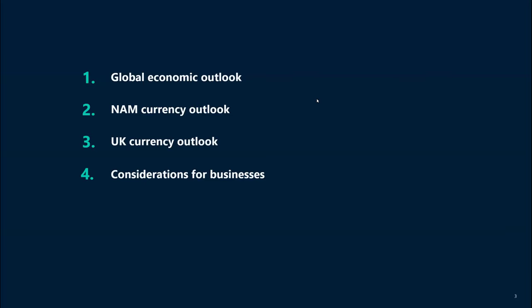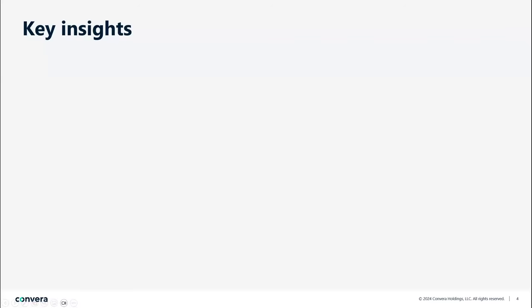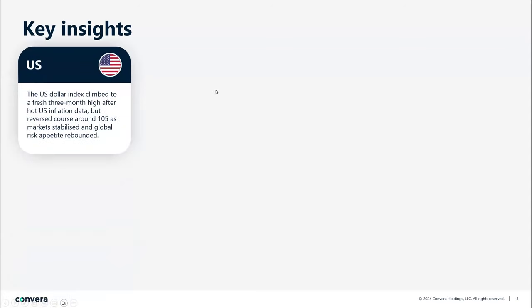Before we get stuck into the detail, we like to provide a high-level overview of some key stats from our research here at Convera. The US dollar continues to have its best start to a year since 2015, thanks to the outperformance of the US economy, but also because of the pushback by Fed policymakers against interest rate cutting expectations in Q1. The dollar had another strong month in February — it hit a three-month high against a basket of currencies in line with three-month highs seen in US yields — but the dollar's dominance seems to be fading slightly, its strength moderating compared to the robust January it had.